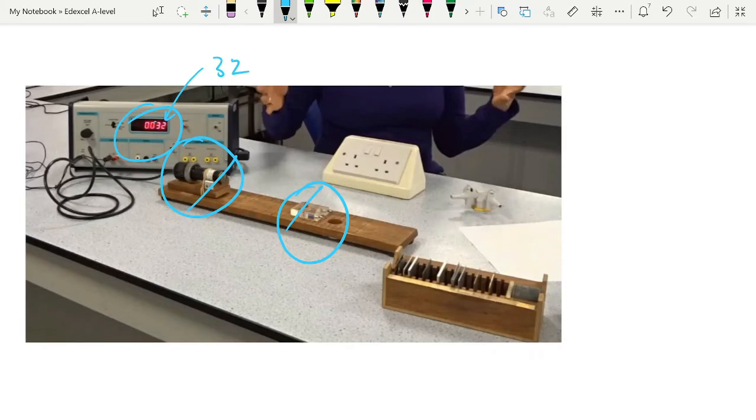Before you do this, you should be taking the background radiation and you should be taking it several times so that you can get an average. You do that on the same day that you're going to do the experiment, and then you put your source at the specific distance from the GM tube and you see what count you get on the counter.